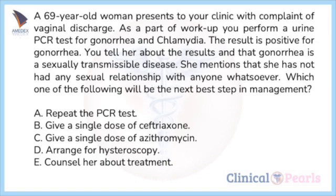Next question: a 69-year-old woman presents to your clinic with complaint of vaginal discharge. As part of the workup you perform a urine PCR test for gonorrhea and chlamydia — the result is positive for gonorrhea. You tell her about the results and that gonorrhea is a sexually transmissible disease. She mentions that she has not had any sexual relationship with anyone whatsoever. Which one of the following will be the next best step in management? A) repeat the PCR test, B) give a single dose of ceftriaxone, C) give a single dose of azithromycin, D) arrange for hysteroscopy, E) counsel her about treatment.